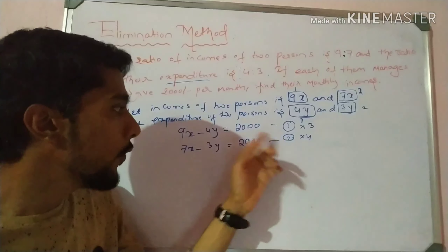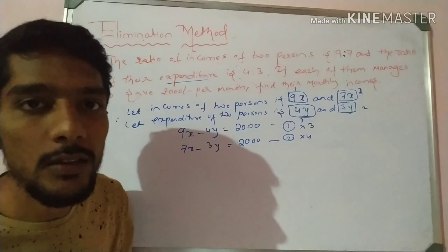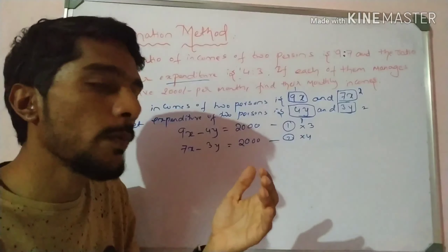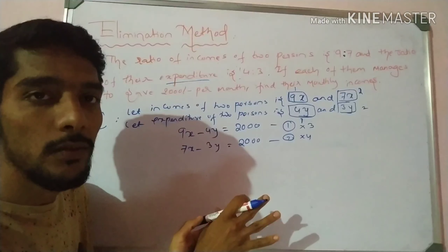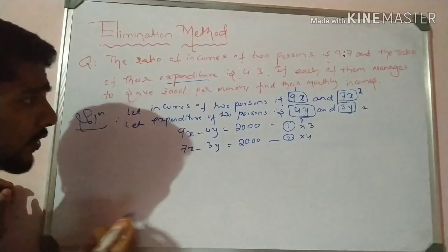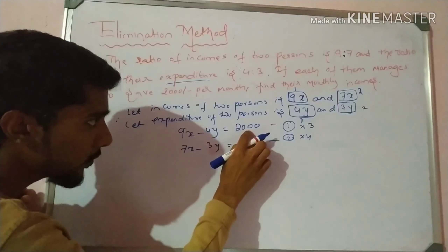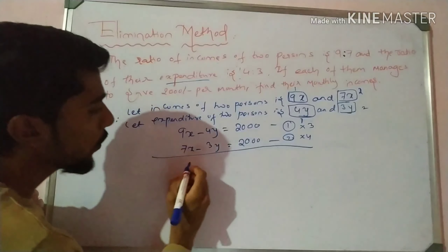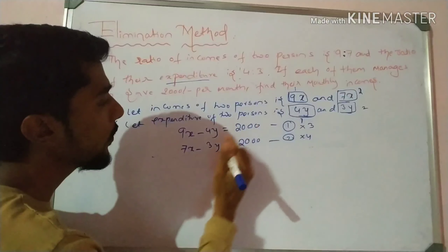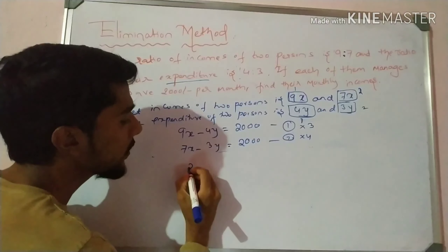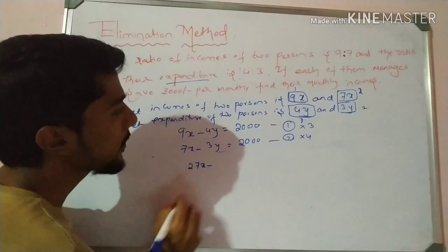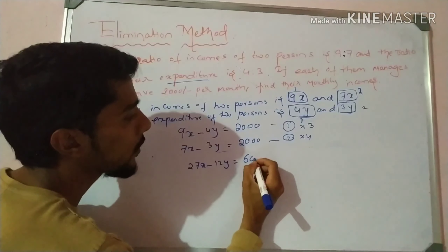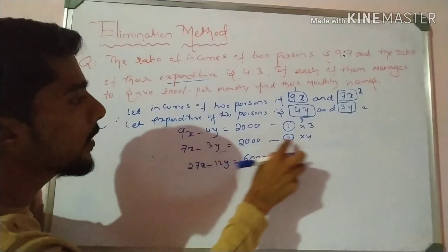The elimination method means we eliminate any one variable — either eliminate x or eliminate y. Eliminate means make it zero, make it cancel with the other. When we have the same number in both equations, they cancel to give zero. If we cancel x, we get the value of y. If we cancel y, we get the value of x.